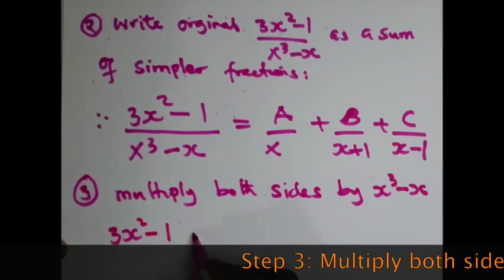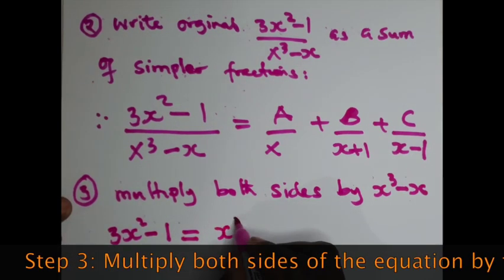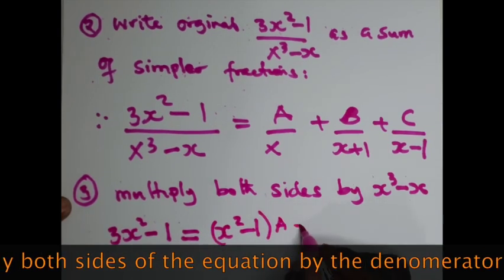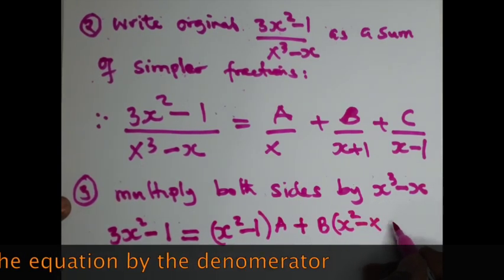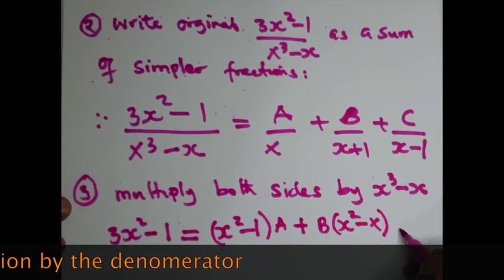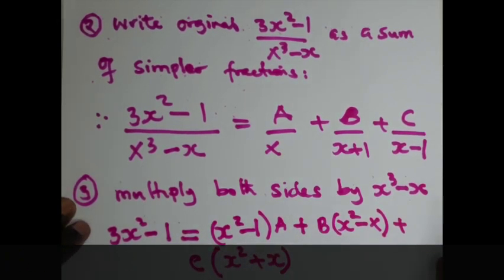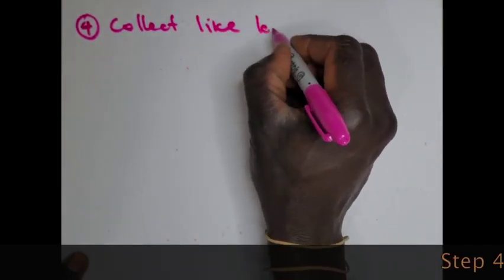Now we're going to get 3x² - 1 on one side, then the rest will be the multiple of the denominator with A, B, and C. Step four: collect the like terms.